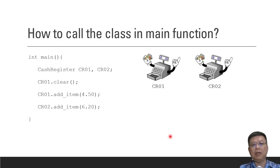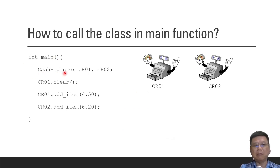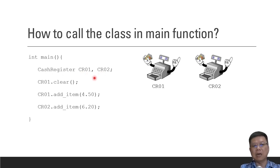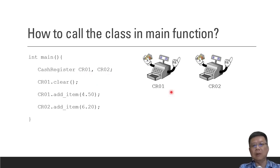How to call it in the main function? In the main function, we have to call the name of the class — this is considered as the class type — and then define how many objects we want. In this case it's CacheRegister, so how many cash registers do we want? If we define CR01, then imagine that is one cash register.